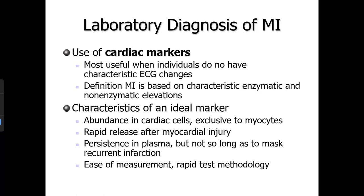Lactate dehydrogenase and myoglobin were previously used as cardiac markers but are no longer used in clinical practice. Currently, troponin and CK isoenzymes are used. Finding the ideal marker is difficult because many substances found inside myocytes are also found in other cell types.